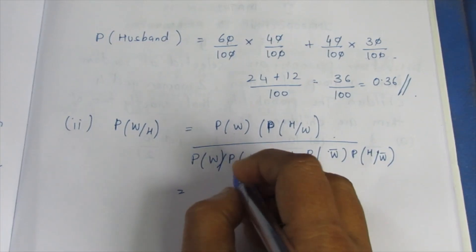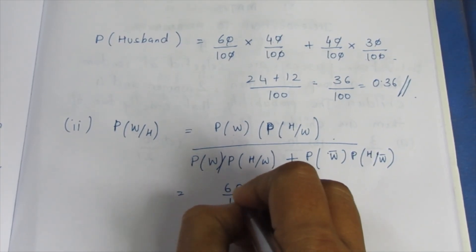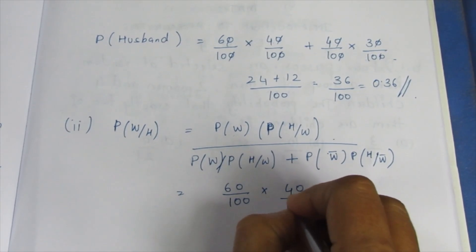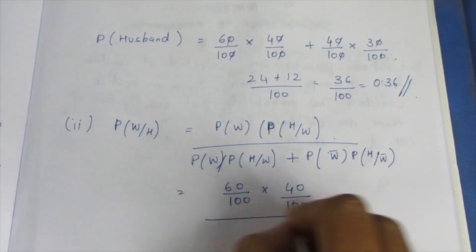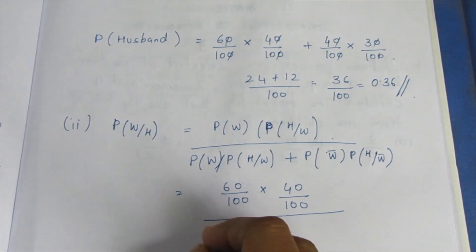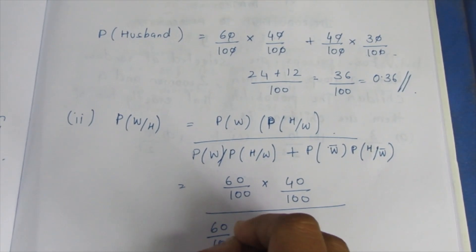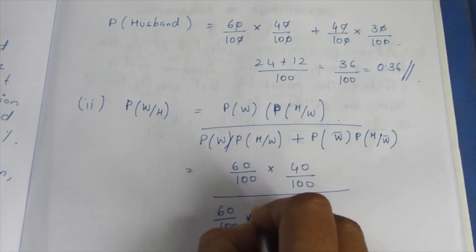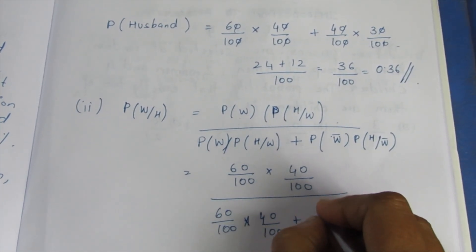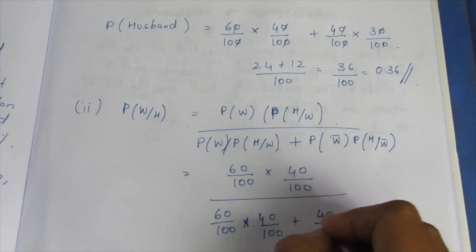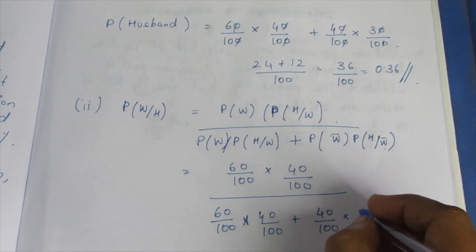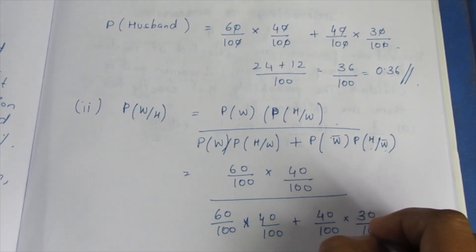So we have 60 by 100 plus 40 by 100, and wife is 40 by 100. Into 50 by 100 to 30.